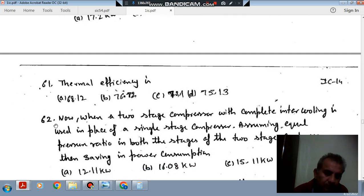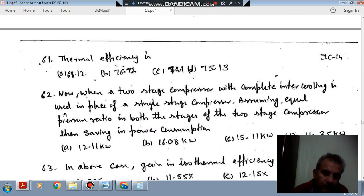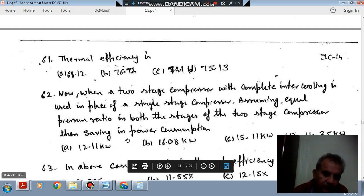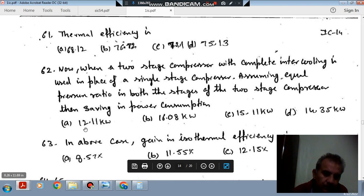Question 61: thermal efficiency is (a) 68.12%, (b) 76.72%, (c) 72.1%, (d) 75.1%. Question 62: when a two-stage compressor with complete intercooling is used in place of a single-stage compressor, assuming equal pressure ratio in both stages of the two-stage compressor.